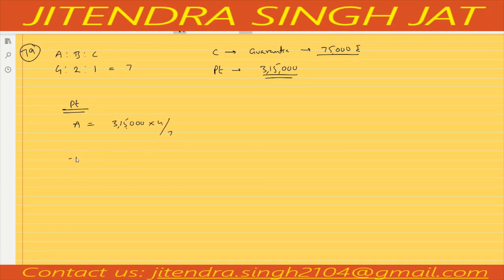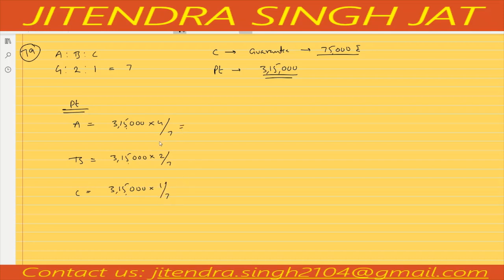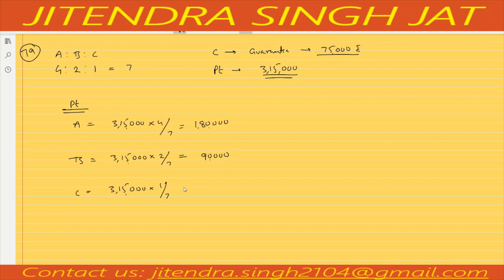A will get 3,15,000 multiplied by 4/7, B will get 3,15,000 multiplied by 2/7, and C will get 3,15,000 multiplied by 1/7. Dividing 3,15,000 by 7 gives 45,000. So A gets 1,80,000, B gets 90,000, and C gets 45,000.